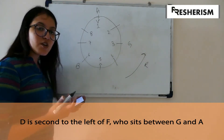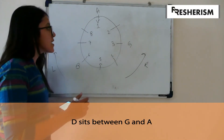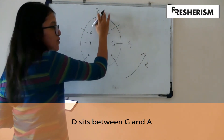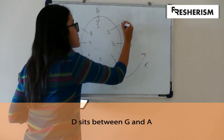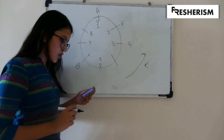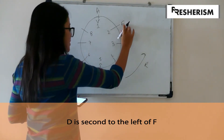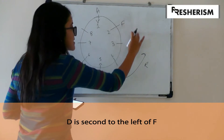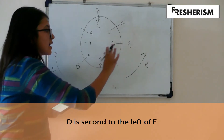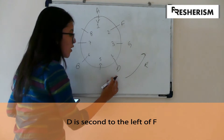We move on to the other conditions. It tells us that F sits between G and A. Now we have a definite position for both G and A, therefore F sits over here. Coming back to the condition we left before: D is second to the left of F. If F sits over here, this is F's left hand side — it moves like this — then D will be here, second to the left of F.